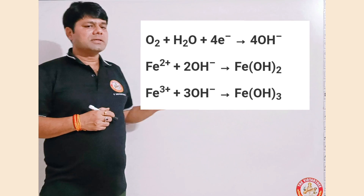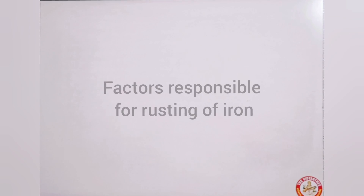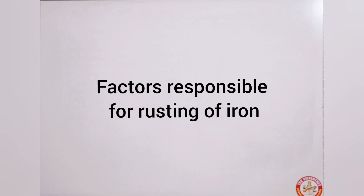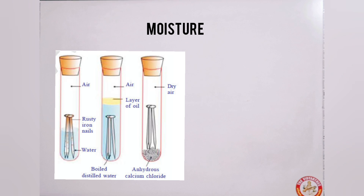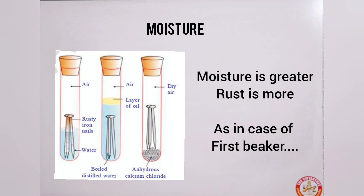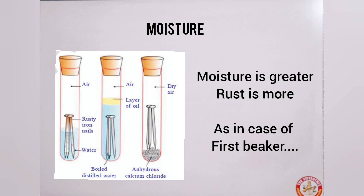Now we will look at the factors which affect rusting of iron. The first factor is moisture. If the availability of water is more in the environment — either as direct contact or through the surrounding environment of the metal — it becomes a greater reason for rusting.